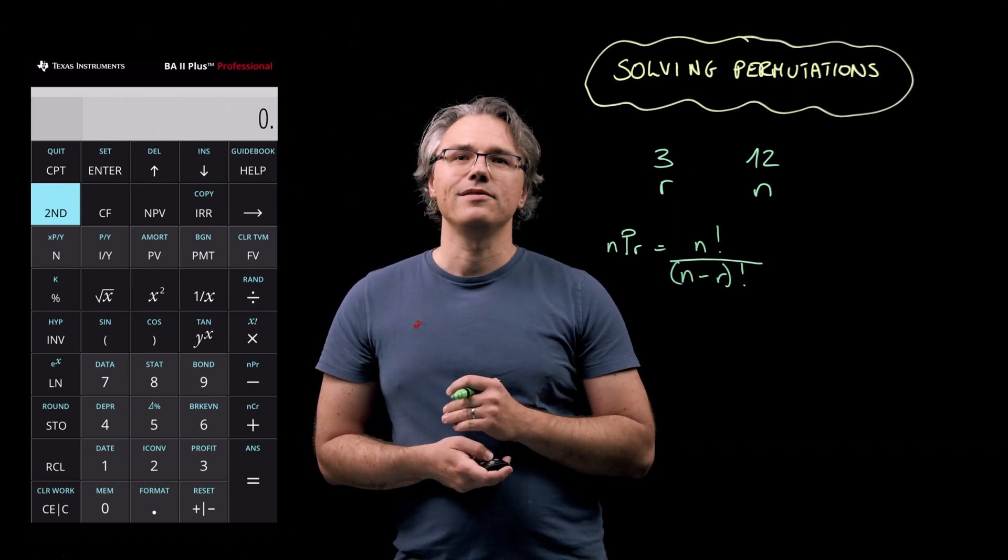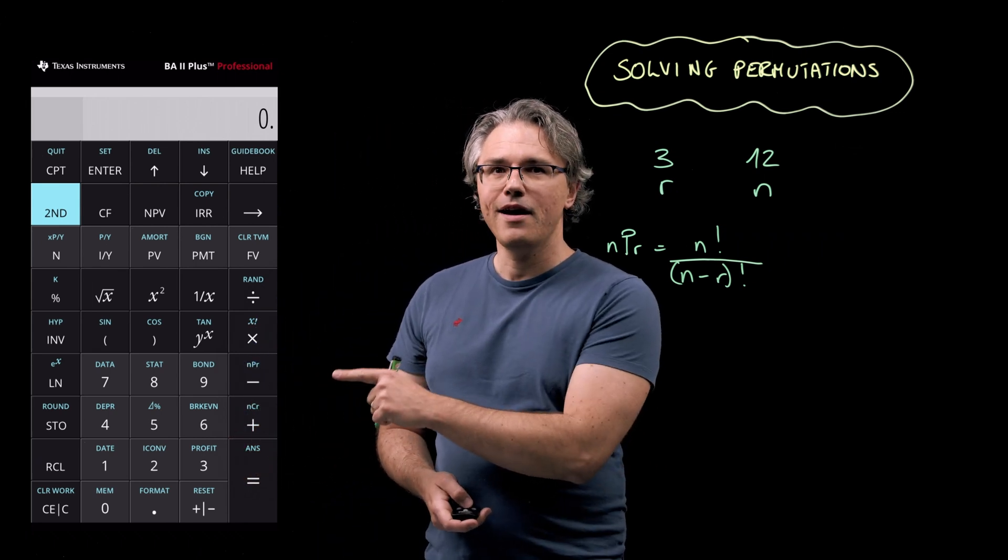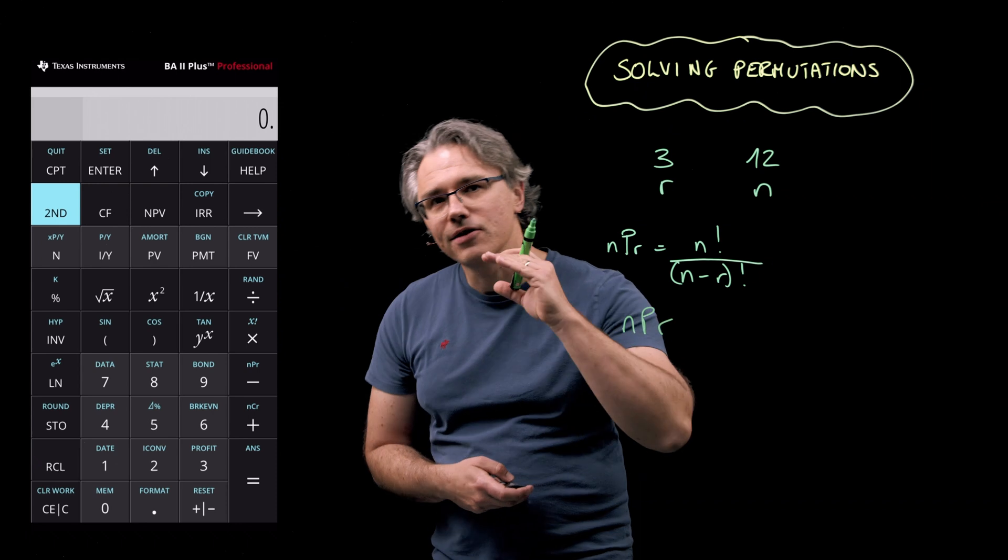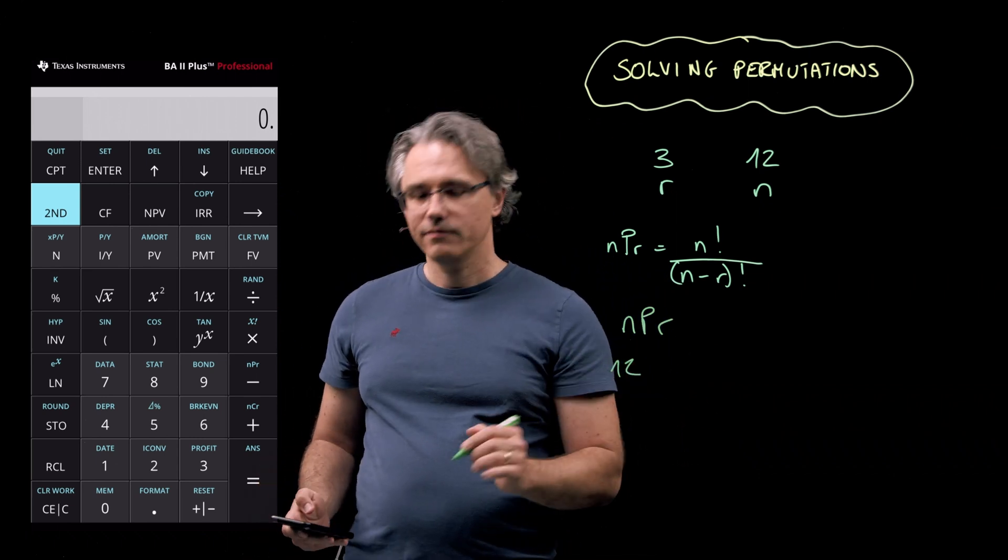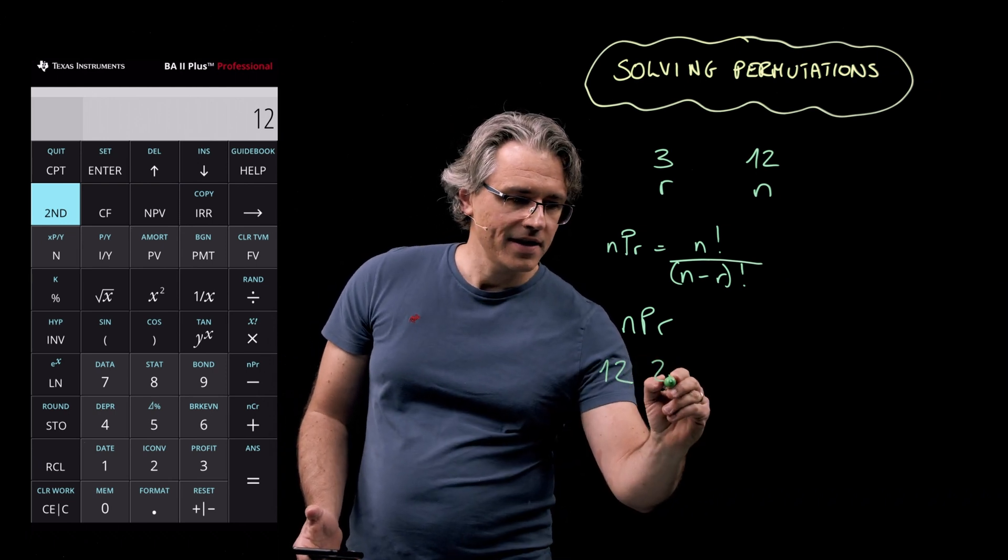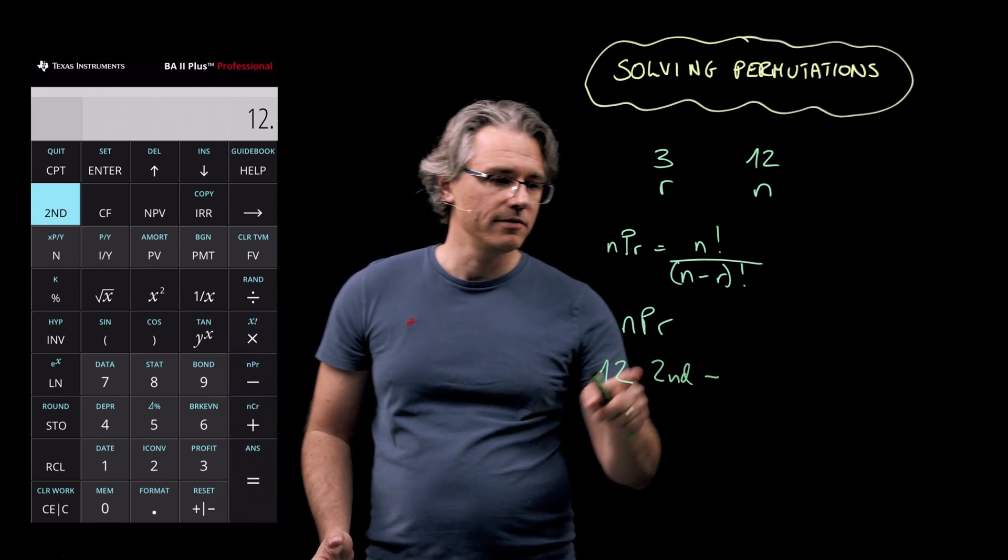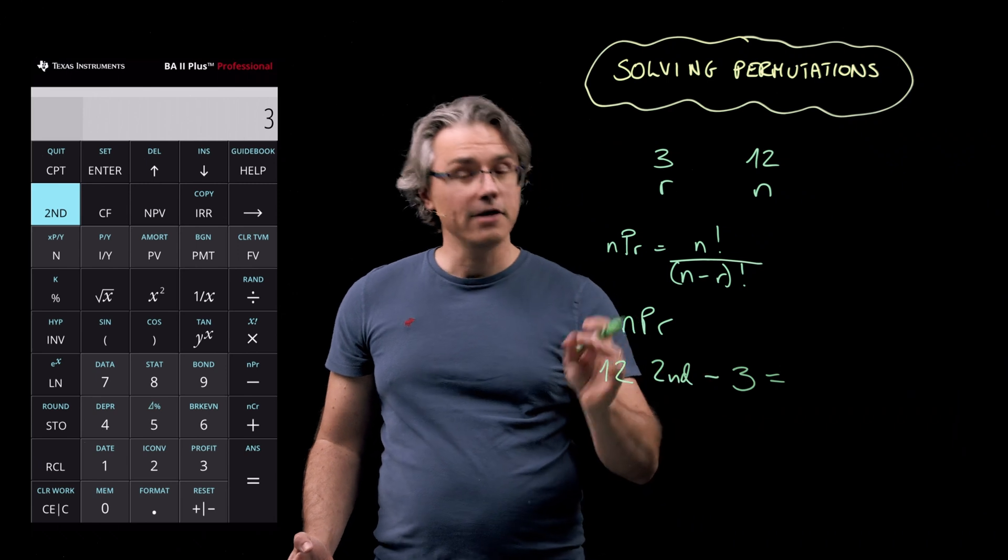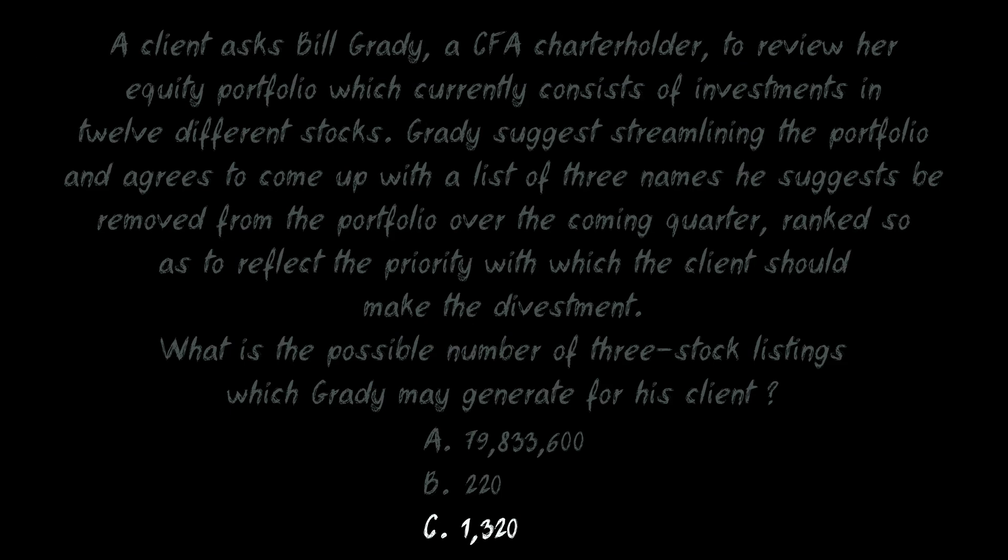But there is a better way, and that is to use the permutation function, which is the secondary function of the minus key. See what's written on that key over here? NPR. And this actually gives you a hint as to the order in which you should enter the relevant values. So type in the value for N, that's 12. I'm doing that on my calculator as well, just pressing 12. Then I need to activate the permutation function, so second followed by the minus key. Nothing happens yet, as we still need to tell the calculator what R is going to be. So that's 3. Just input 3. And as you can see, no result yet. But the equals key should do the trick. Yes, when I press equals, I see an answer of 1,320, which corresponds with answer C.